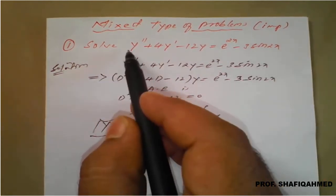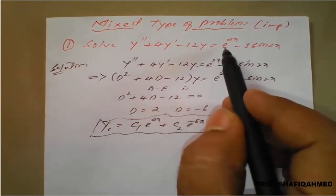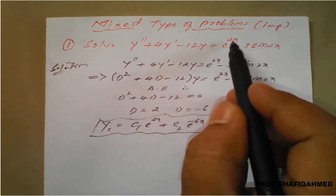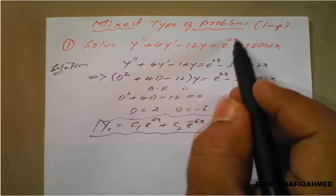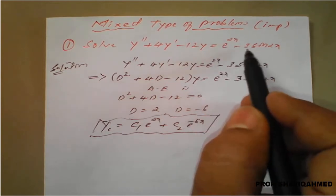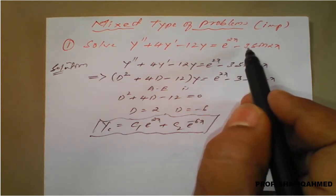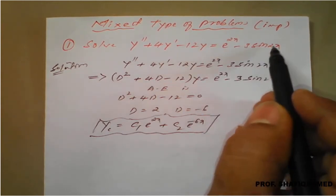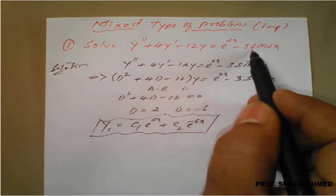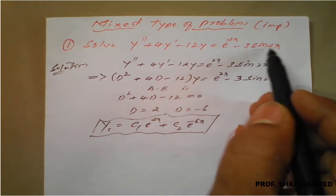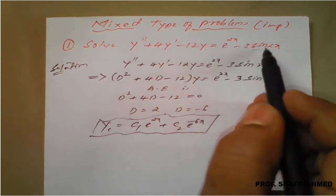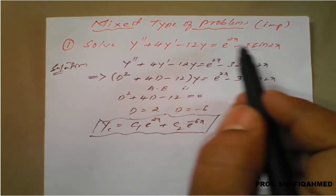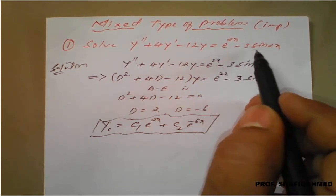For this question, just see here. The right hand side: e raised to 2x is a type 1, minus 3 is a constant, and sin 2x is a type 2. So it is a mixture of type 1 and type 2. So how to solve, we will see here.